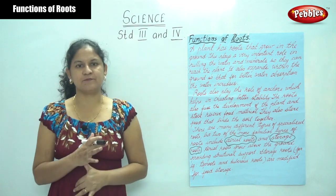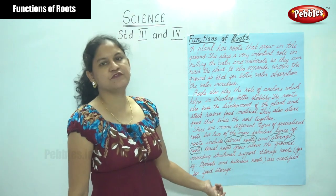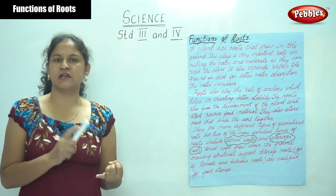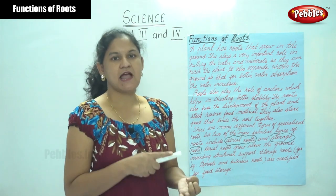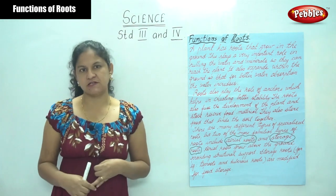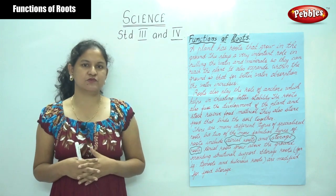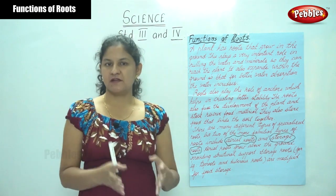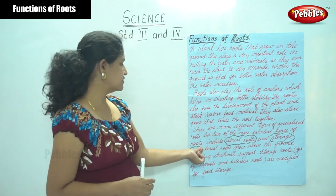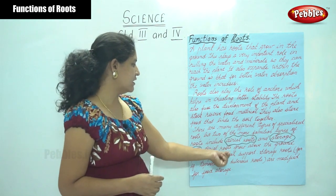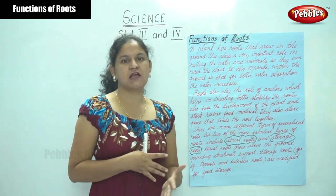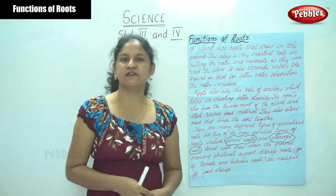In summary, roots play an important role in absorbing water and minerals from the soil, and they act as an anchor for the structural stability of the plant. There are two familiar types of roots: aerial roots, which grow above the ground providing structural support, and storage roots — tap roots and tuberous roots — that are modified to store food.